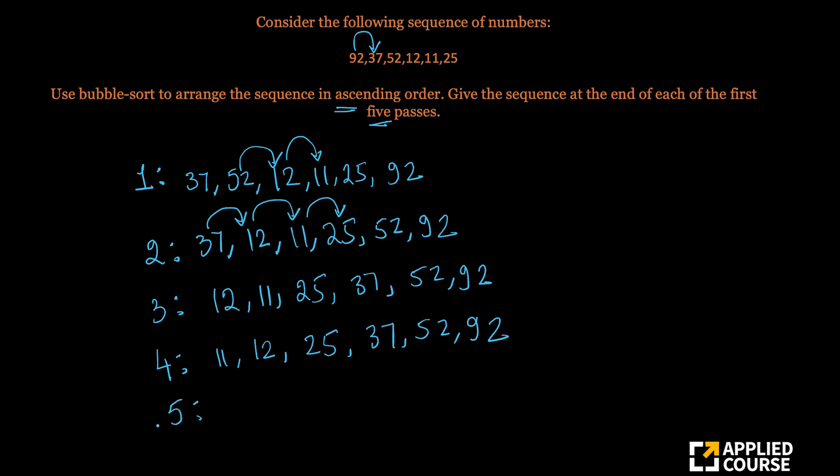What about the fifth swap? So 25 is already sorted enough. So these at the end of fourth iterations, four swaps have been made. At the end of fifth iteration, there is nothing to swap enough because 11 won't get swapped with 12. And you're done.